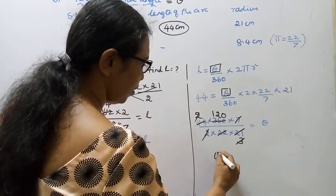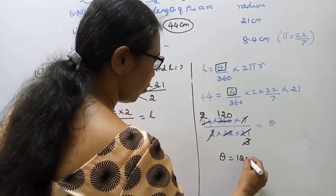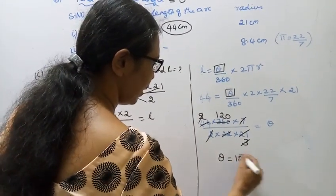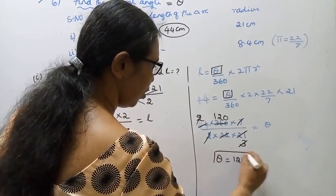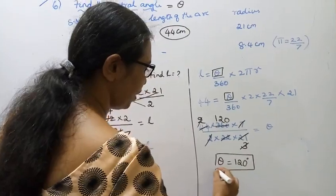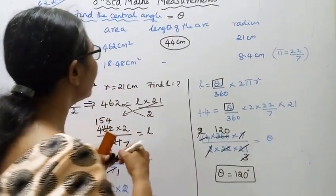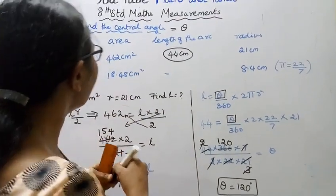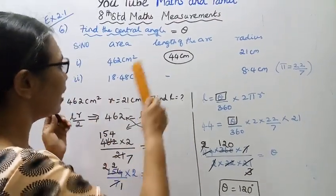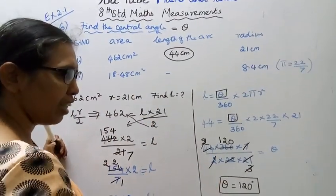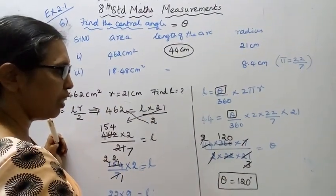Theta equals 120 degrees. So for the first subdivision, the central angle theta equals 120 degrees.